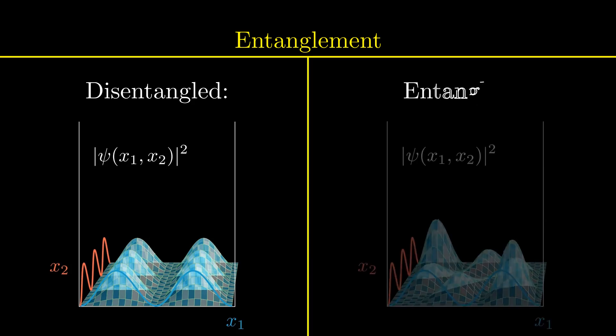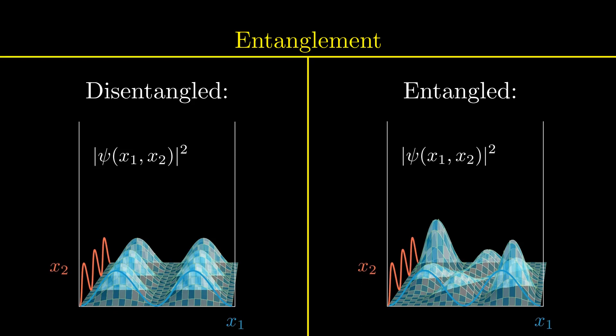On the right side, we see what happens when we symmetrize the wavefunction. Here the translational symmetry is removed and indeed the particles are entangled. The probability density function of observing the second particle changes as we observe the first particle.